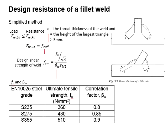For welded connections, we need to design for the resistance of the fillet weld to ensure the connection does not fail. This slide shows the equations to determine the resistance of the fillet weld. In principle, the resistance provided by the weld needs to be greater than the load acting on the connection.